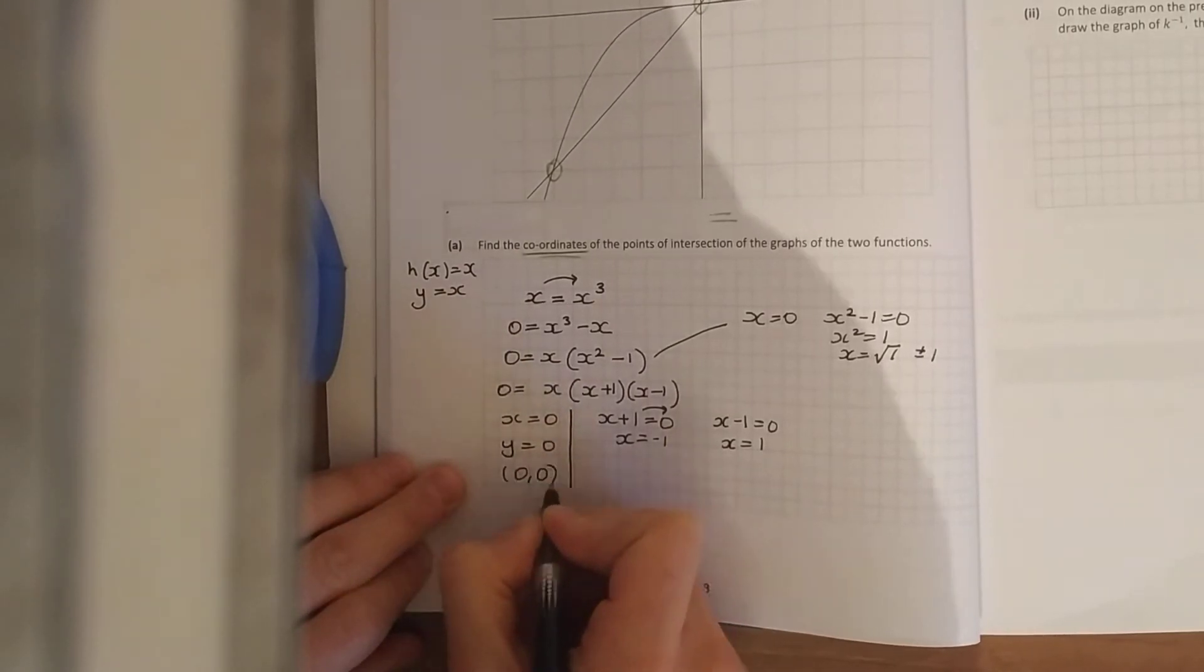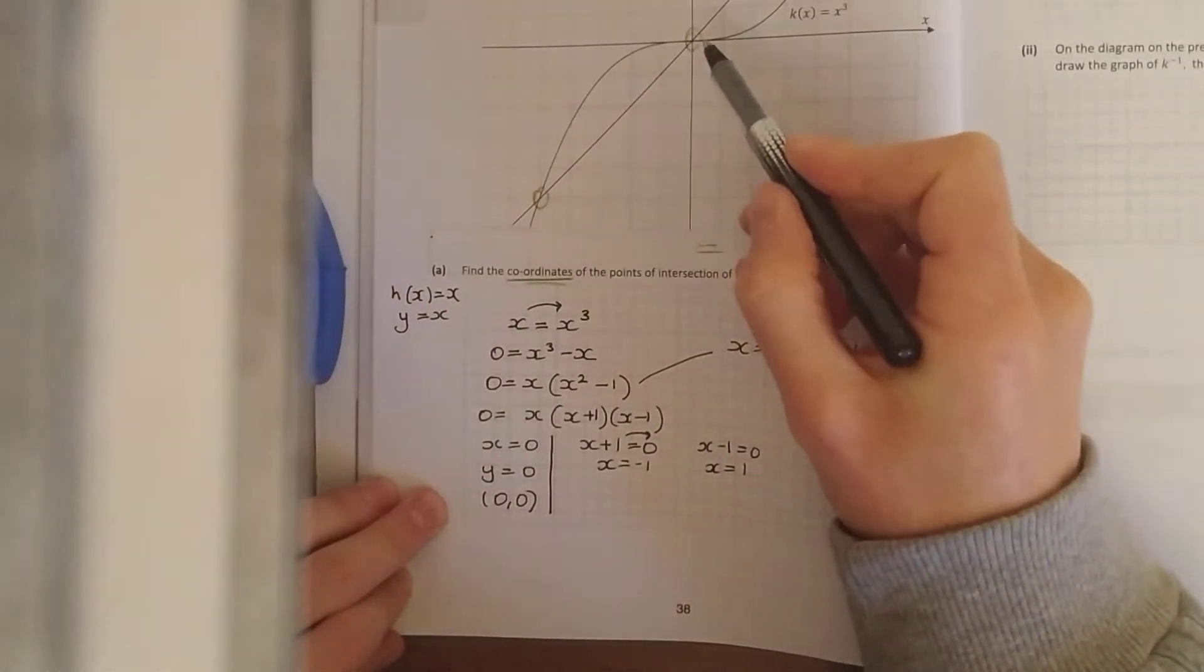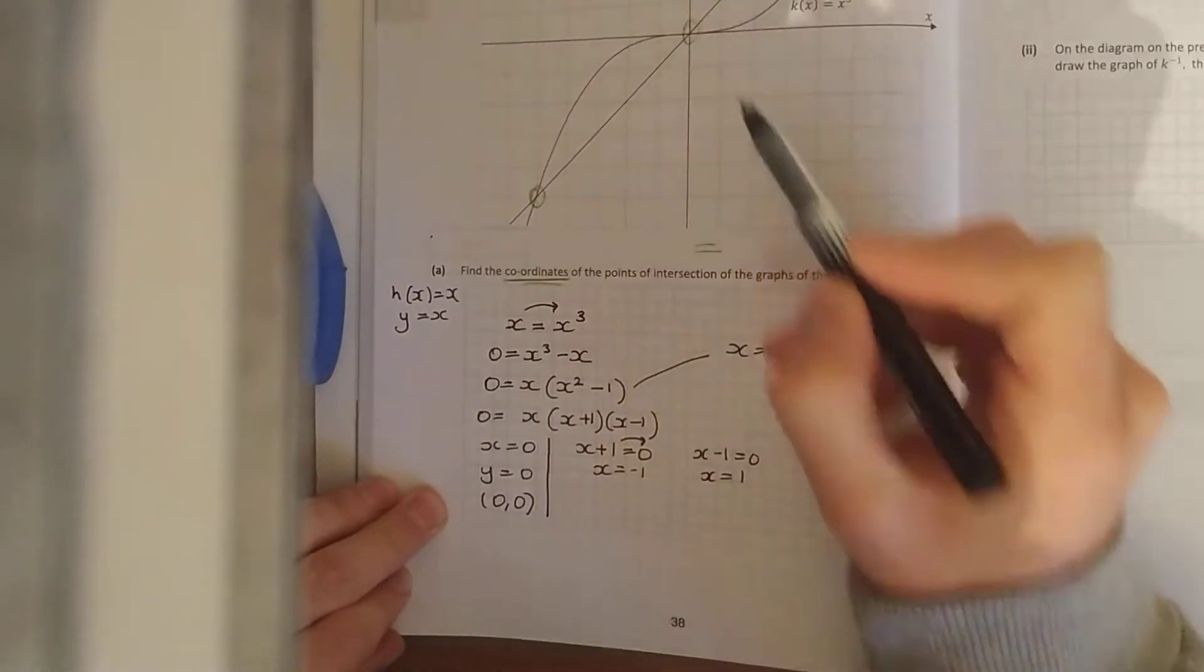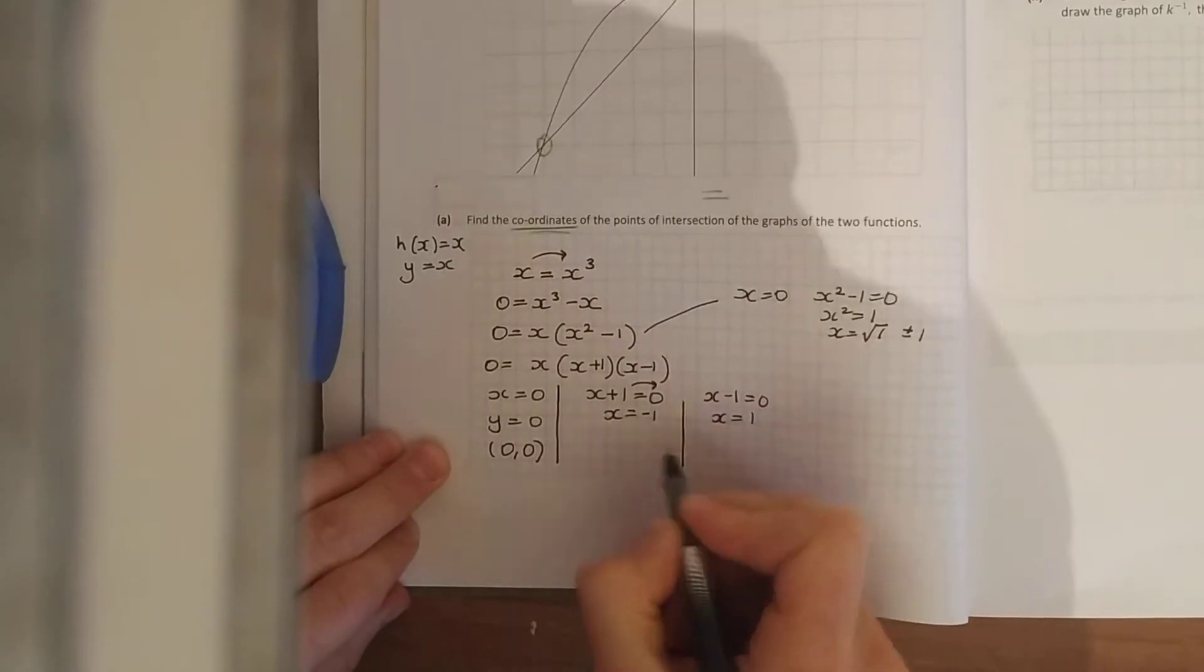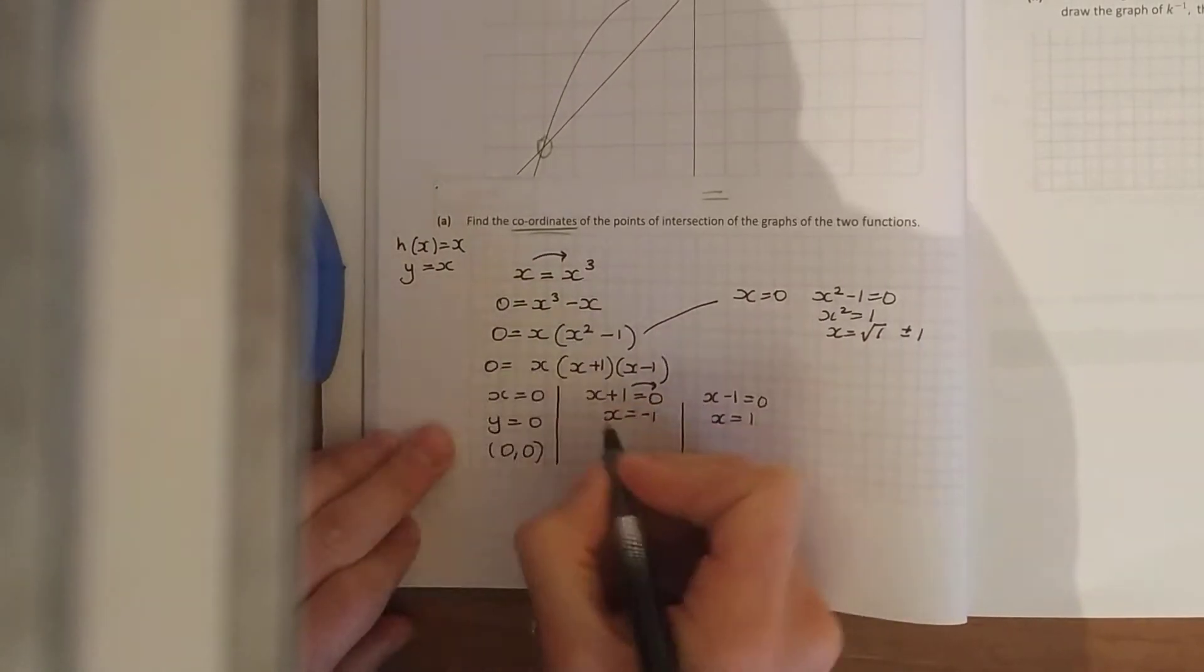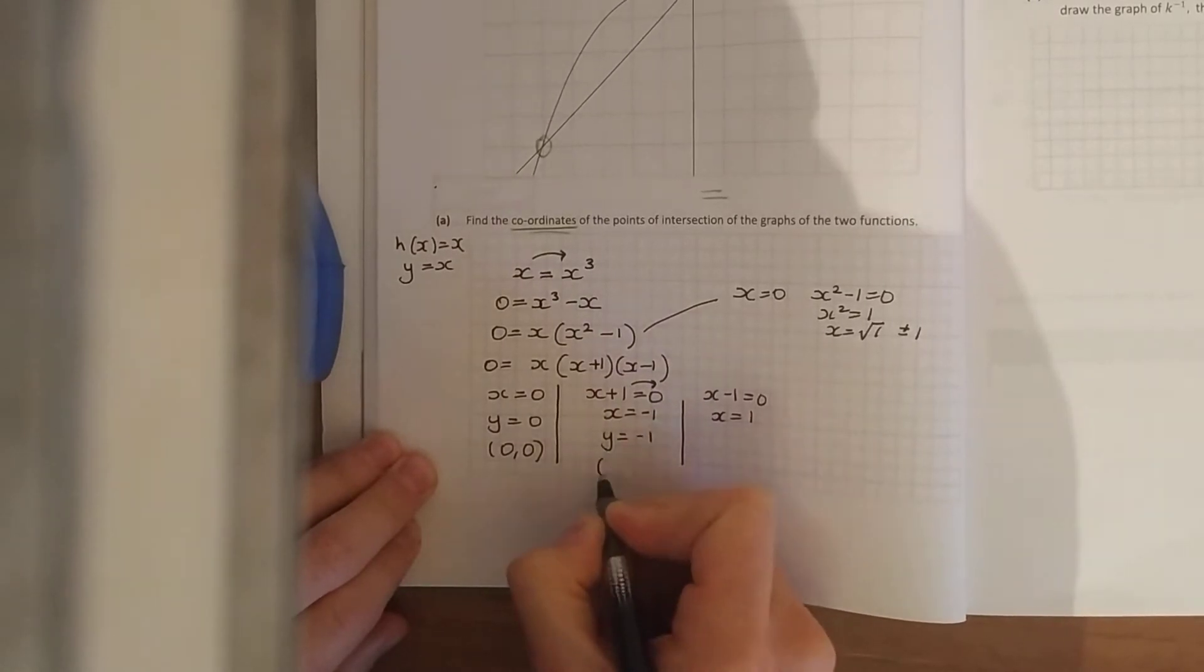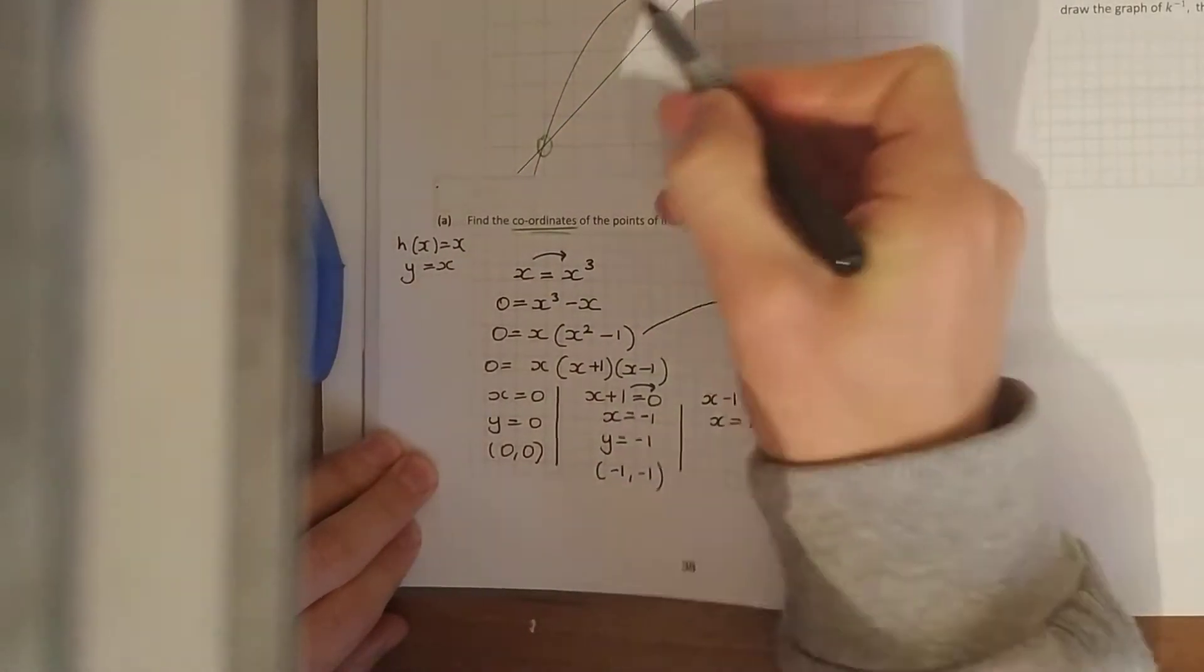So your point there is (0,0), and that looks right if you look back in your graph that's definitely (0,0), the origin, so we're good. Your other point here, when x = -1, y is also equal to x, so y = -1. So your point is (-1,-1).